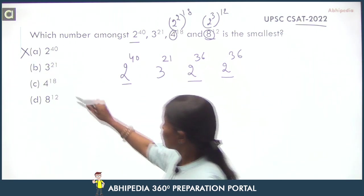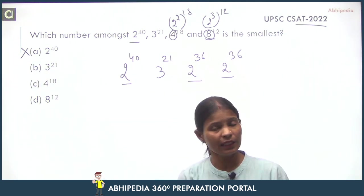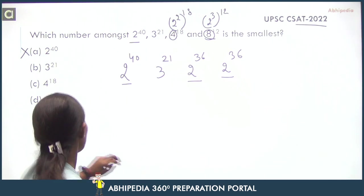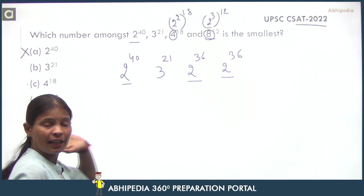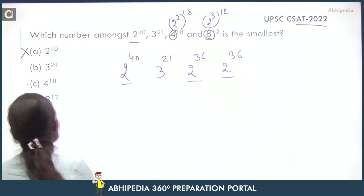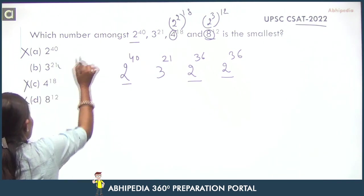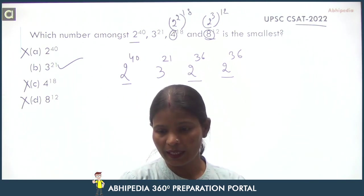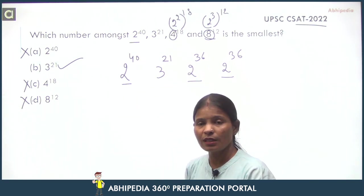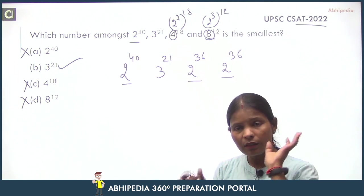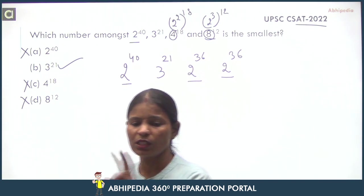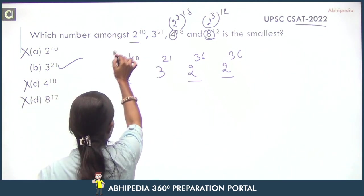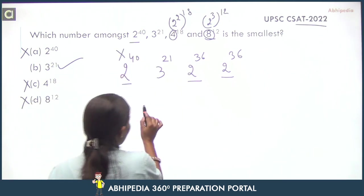Again, you have the options. Now there are two options, so correct answer is not possible. That means 3 raised to power 21 is the correct answer. So you can see directly, but for your detailed solution, you should know how to do the comparison. Now we will do the comparison.